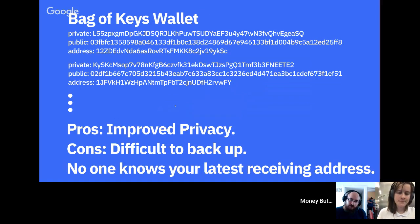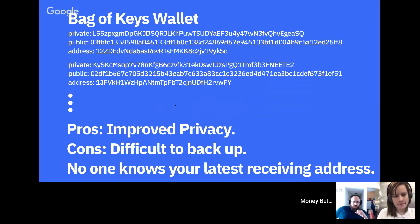Early in Bitcoin's history, the original Bitcoin client would generate new addresses each time you wanted to receive money, and send change back to a new change address. This adopted the philosophy of a 'bag of keys' — each time you need a new address, you generate a random new one. This has much better privacy because you're always receiving money at new addresses.